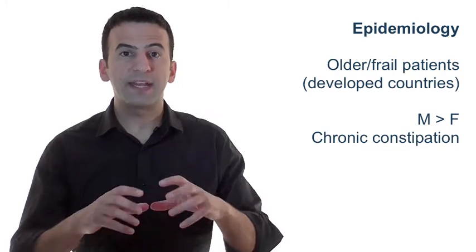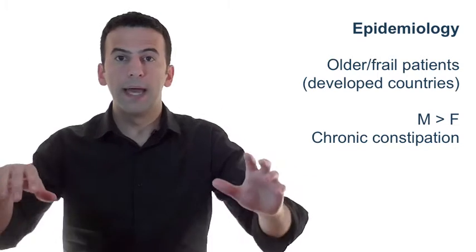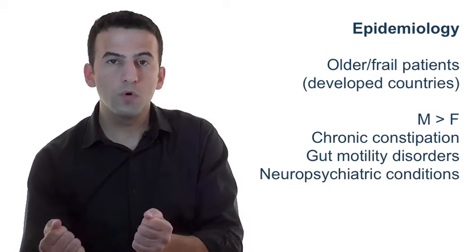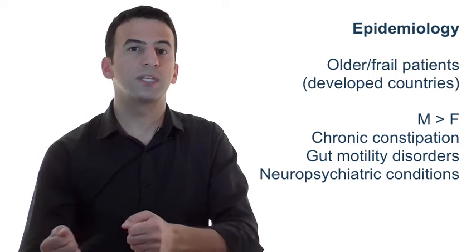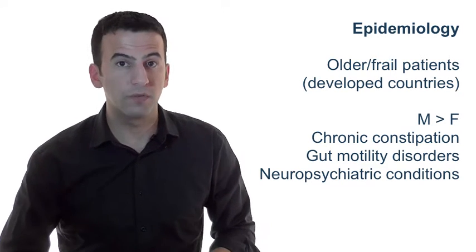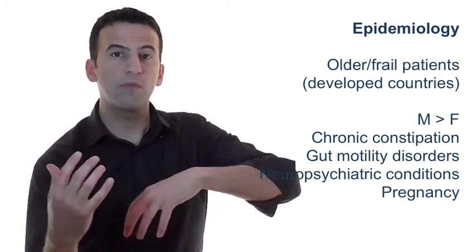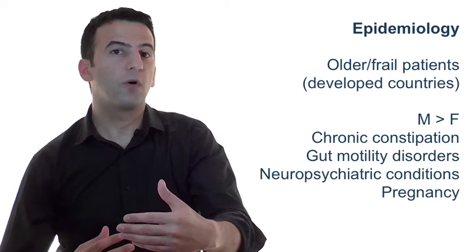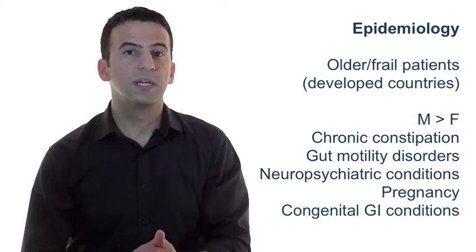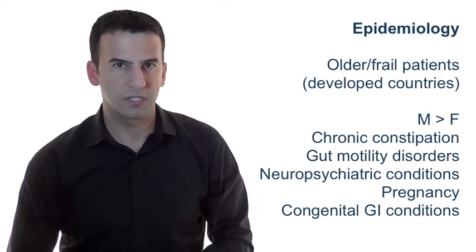It is believed that in time the sigmoid colon may elongate and become very redundant and floppy, making it prone to twisting. Gut motility disorders and disorders caused by neurological or psychiatric conditions and their associated medications mean that these patients are also at risk of sigmoid volvulus. In pregnancy, an enlarging uterus may trigger volvulus of a redundant sigmoid colon. If sigmoid volvulus occurs in children, it is usually a result of an underlying condition such as Hirschsprung's disease, chronic constipation, and megacolon to name some examples.